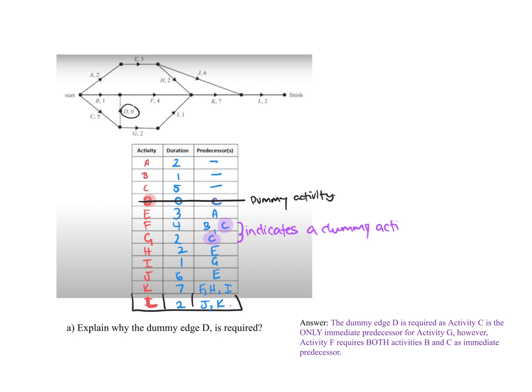To explain why edge D is required: the dummy activity edge D is required because activity C is the only immediate predecessor for activity G. Because G only has C, it can't be connected to anything else directly, but we also need C to happen before F — so we need a dummy activity there.